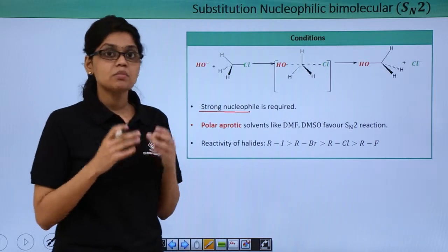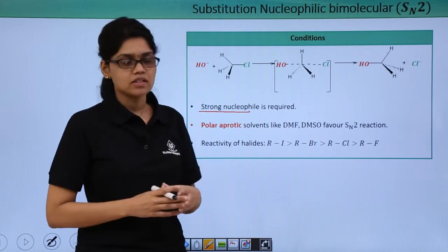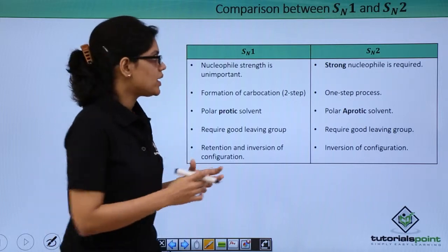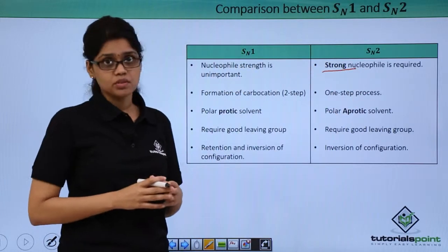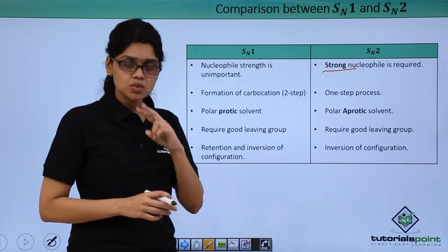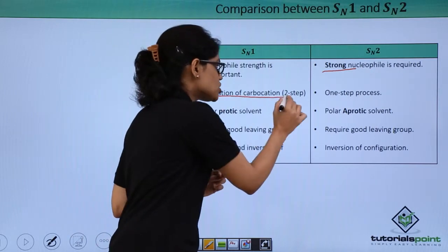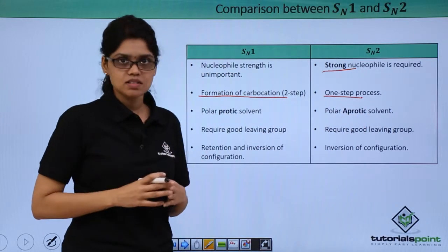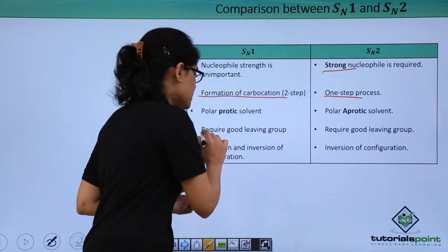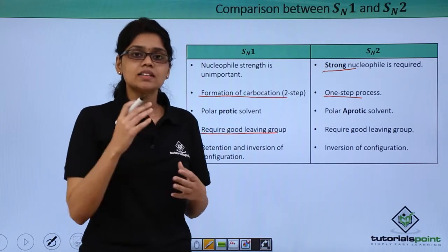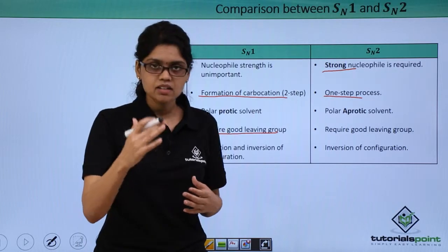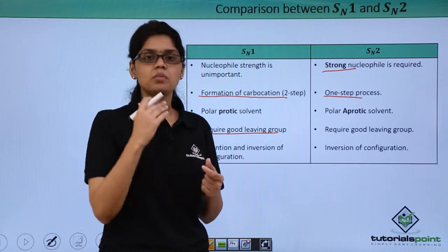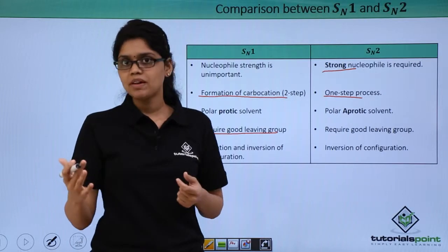Now let us quickly compare the major differences between SN1 and SN2 reactions. Nucleophile strength is irrelevant in SN1 whereas SN2 requires the presence of a very strong nucleophile. SN1 is a two-step process involving formation of a carbocation, while SN2 is a one-step process involving a transition state. Both reactions require the presence of a very good leaving group; thus the reactivity of alkyl halides is RI greater than RBr greater than RCl greater than RF, because I⁻ is a much better leaving group than Br⁻, which is better than Cl⁻ and F⁻.